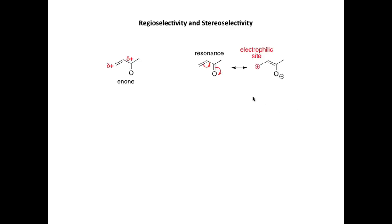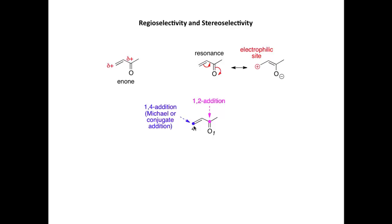Let's move on and look at some regioselective and stereoselective transformations, concentrating on enones. For an enone we can draw a resonance structure taking electron density from the C=C double bond and pushing it onto the oxygen atom. In this resonance form, the carbon atom at the beta position bears a positive charge, making it an electrophilic site. A nucleophile therefore has a choice of two different sites of attack: directly at the carbonyl group, described as 1,2-addition, or at the 4-position of the enone, described as 1,4-addition, Michael addition, or conjugate addition.